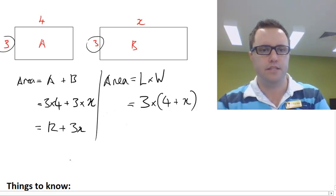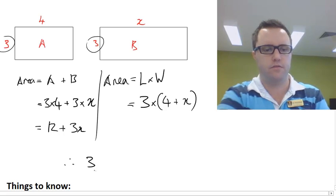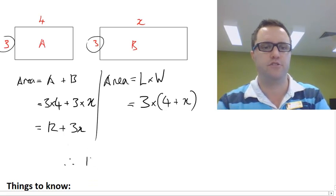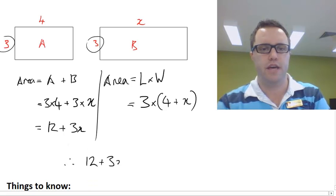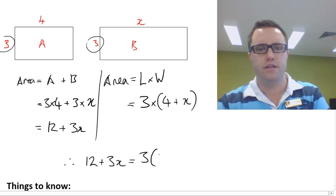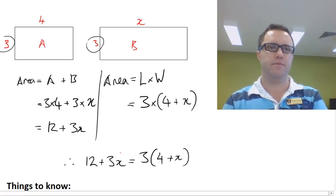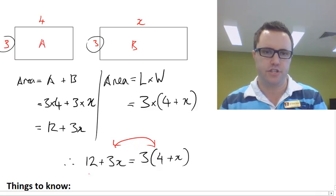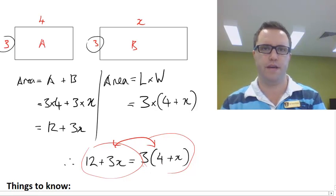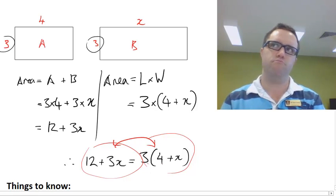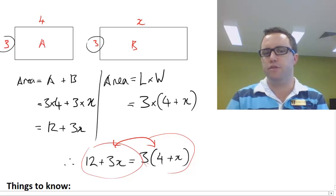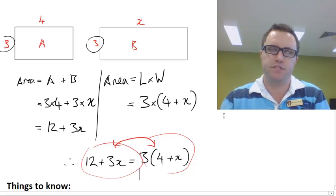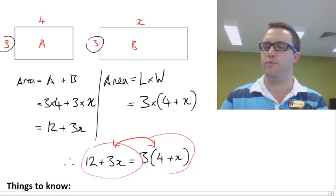So that means therefore that 12 plus 3x is the same thing as 3 times 4 plus x. We're going to see how to be able to negotiate between these two types of expressions. This version here is called the expanded form and this one here is called the factorised form. This is the kind of thing we're going to be doing today, turning these into expressions with brackets.